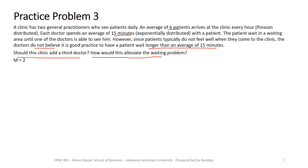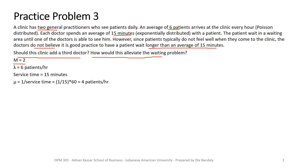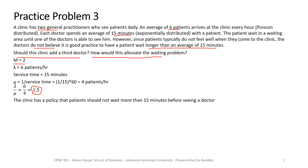So first, m = 2. Lambda = 6 patients per hour, as given. Service time is 15 minutes, which gives us mu = 4 patients per hour. Our lambda-over-mu ratio is 1.5, which we'll use a lot.